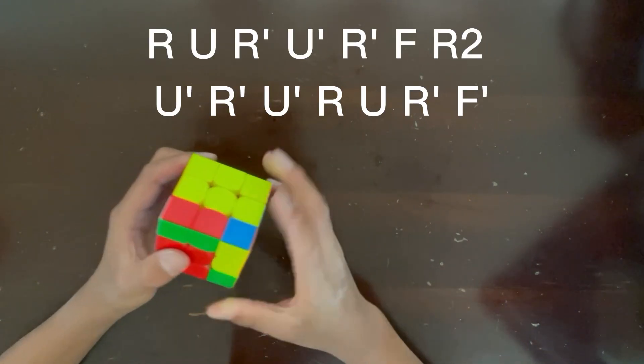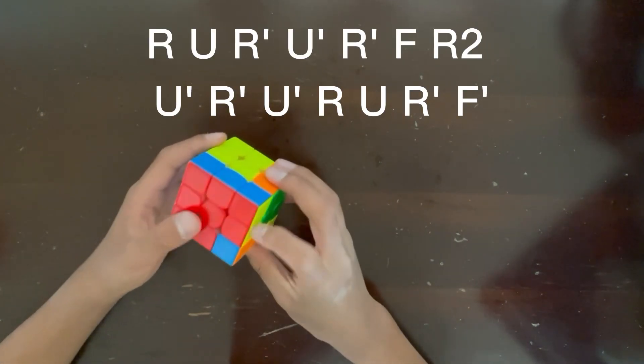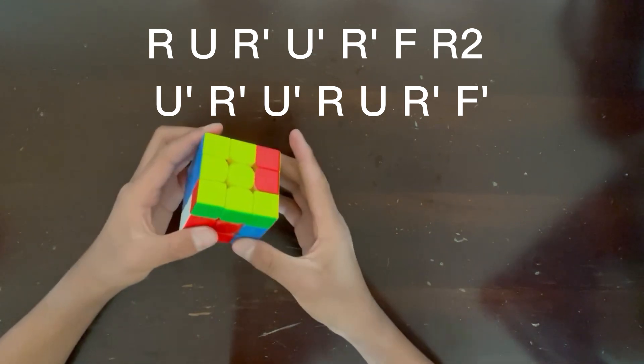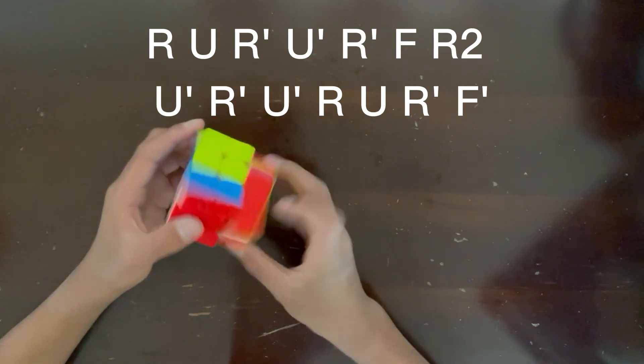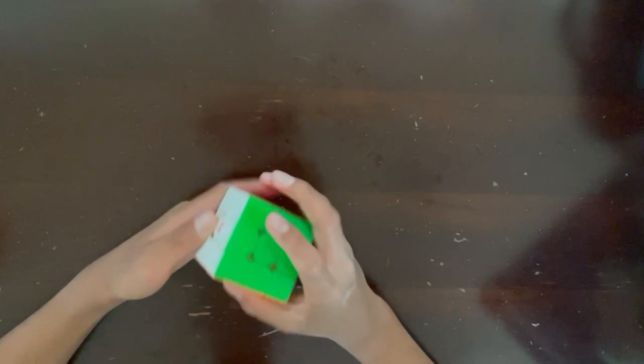R, U, R', U', R', F, R2, U', R', U', R', U', R', F', and now you have a solved cube.